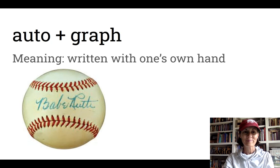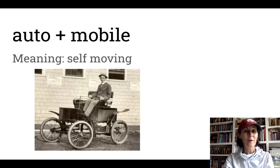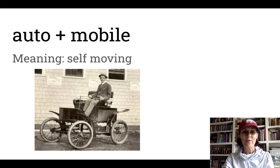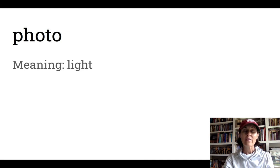Automobile means self moving. When the automobile was first invented, people were using horses and buggies and carts to get around. The automobile allowed people to move on their own, not relying on a horse.